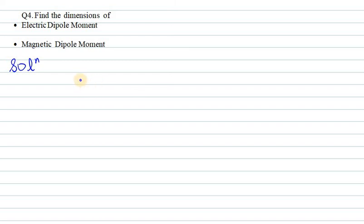Hello everyone, starting with question number four. In this we need to find the dimensions of electric dipole moment and magnetic dipole moment. Electric dipole moment can be defined as P equals Q dot D.